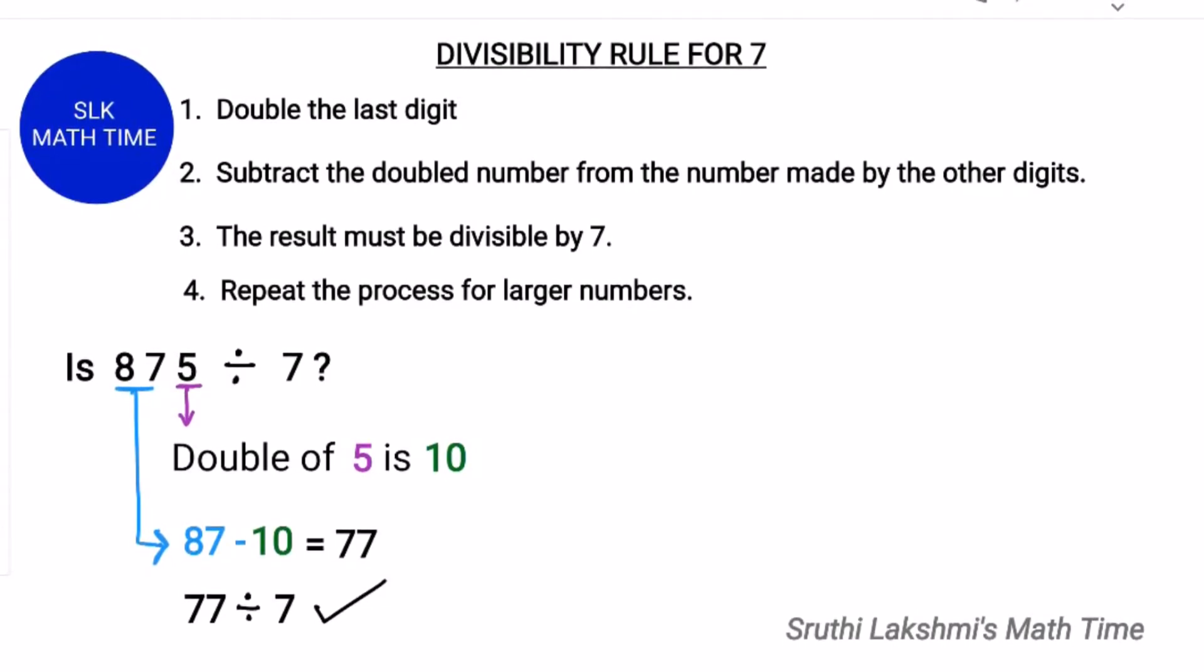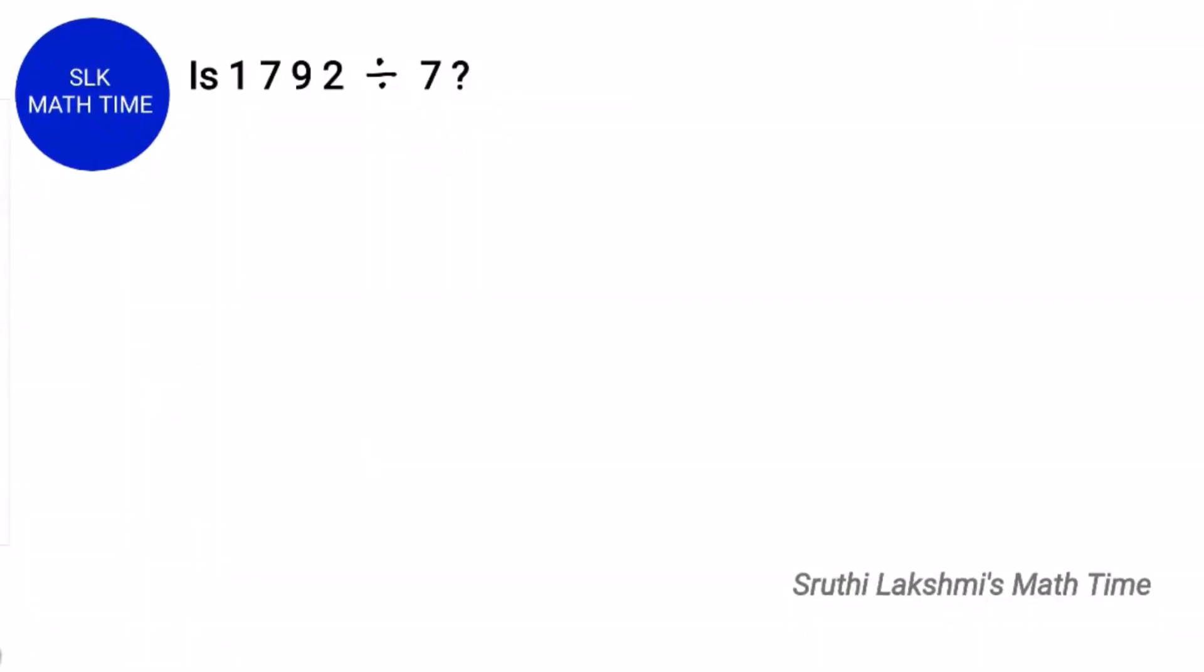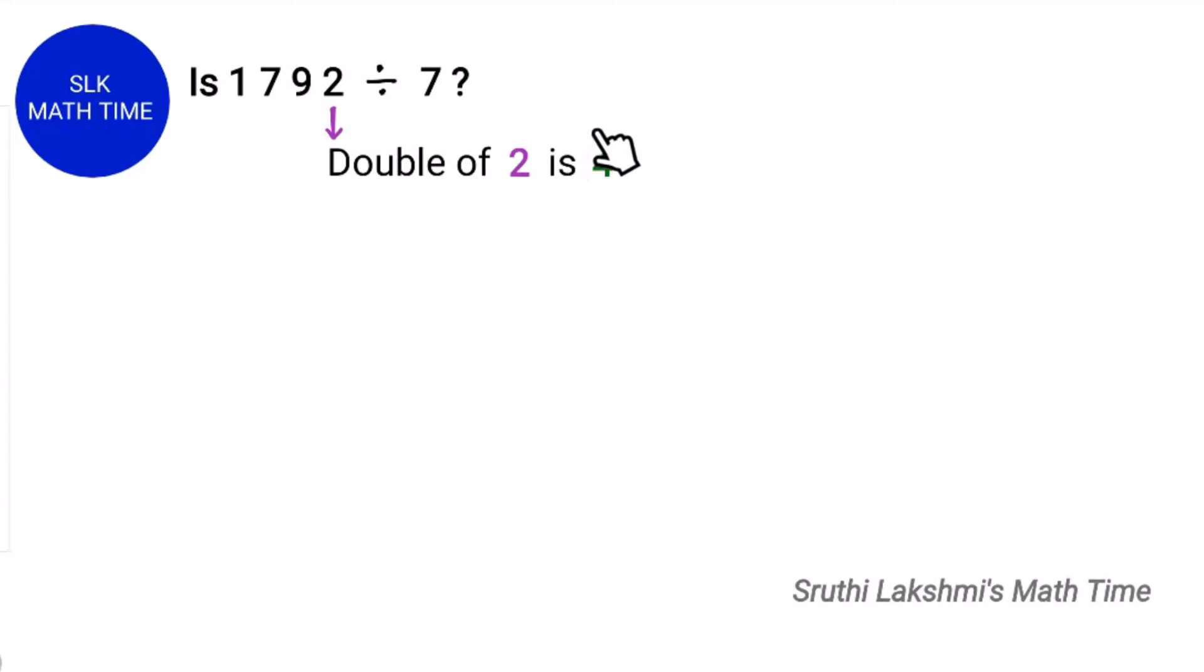Isn't this method so easy? Let's see another example. Is 1792 divisible by 7? The last digit here is 2. The double of 2 is 4.